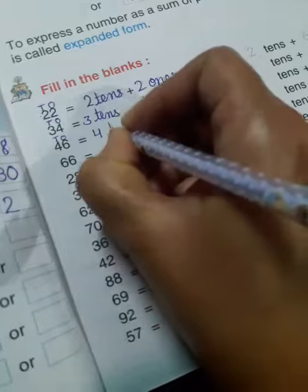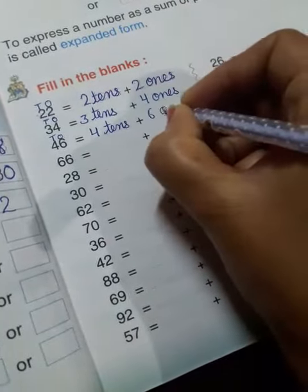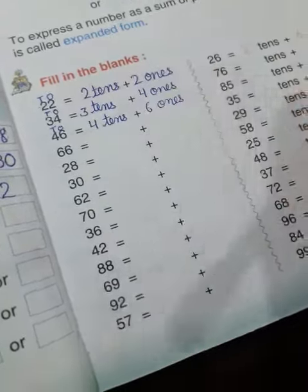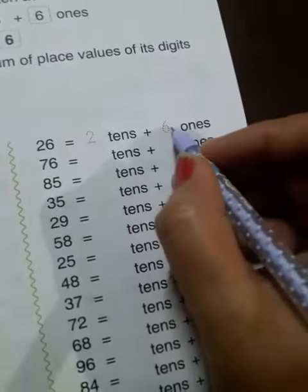Now let's do these sums yourself. 26 is equal to 2 tens plus 6 ones.